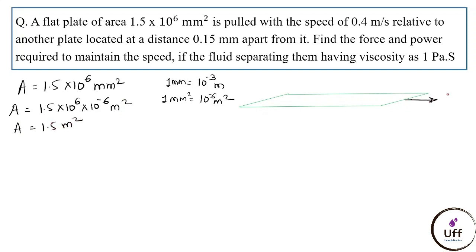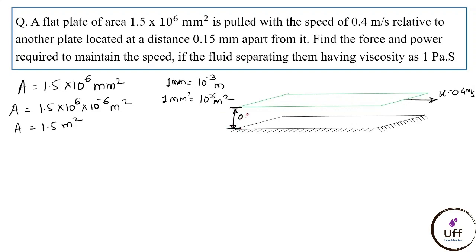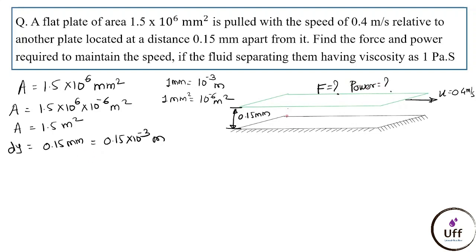The plate is pulled with a speed of 0.4 m/s relative to another plate. The distance between the two plates is 0.15 mm, so dy = 0.15 mm = 0.15 × 10⁻³ m. We need to find the force and power. The fluid viscosity is 1 Pascal second. We'll apply Newton's law of viscosity.